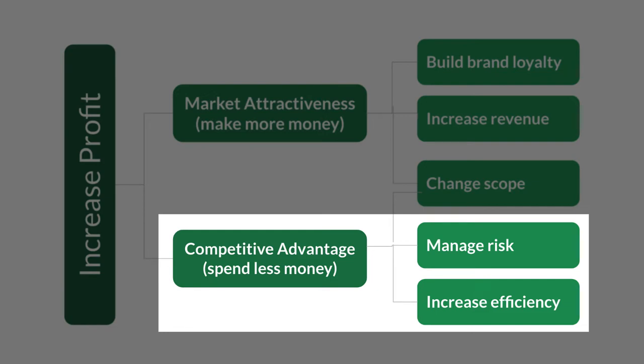Content reuse also increases competitive advantage and means the company spends less money, all because it enhances efficiency. For instance, new publications are delivered more quickly by pulling existing topic files rather than recreating them, and multiple employees will not be creating the same content over and over. When there's a change at the company, revisions are made in only one topic file and then pushed out to all the publications in which that topic appears. Or if a new web design is implemented, the same topic files are used without the need for editing.